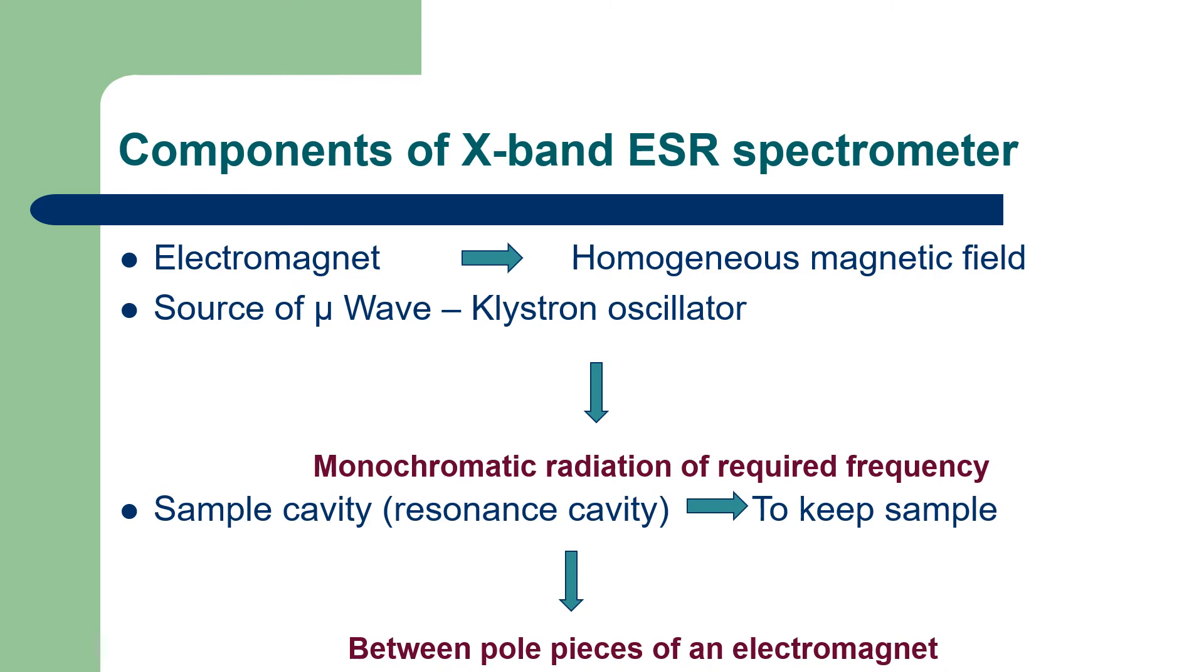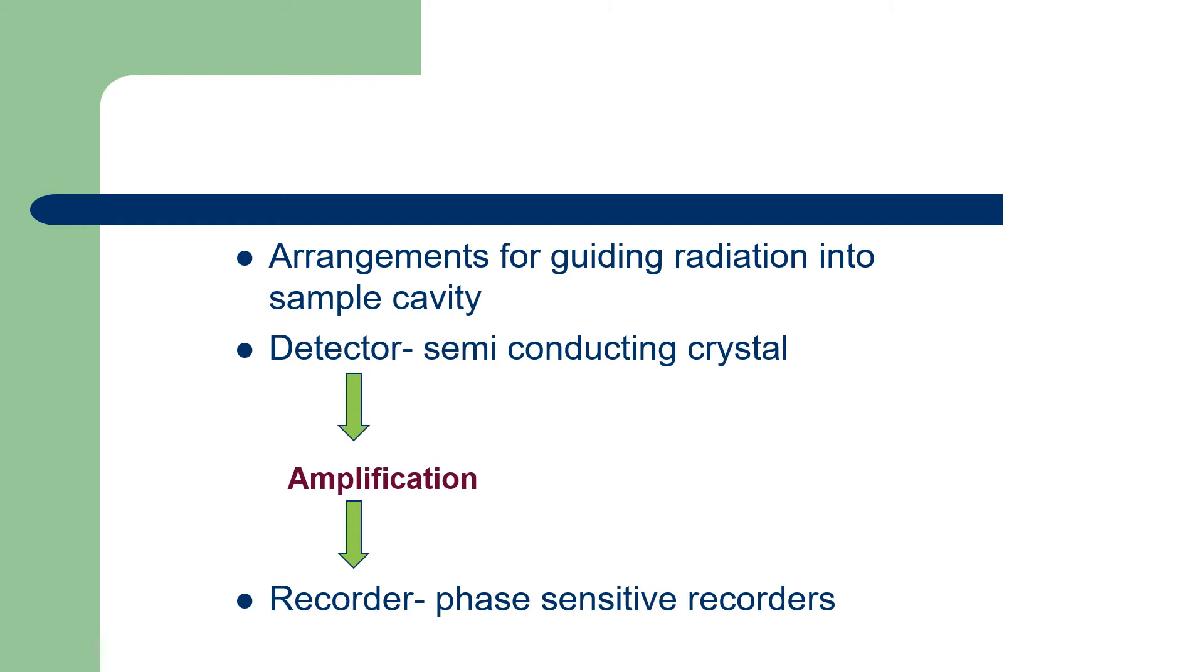The third component is a sample cavity or resonant cavity. The sample cavity is used to keep our sample and is placed between pole pieces of the electromagnet. The fourth component is the arrangements for guiding the radiation emitted by the source into sample cavity. Then fifth one is a detector. We can use semi-conducting crystals as a detector. After detection, we amplify the weak signals using an amplifier. Then this amplified signal is sent to the recorder.